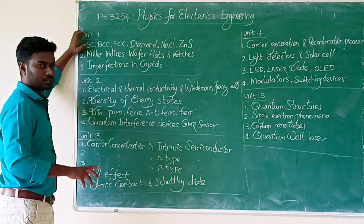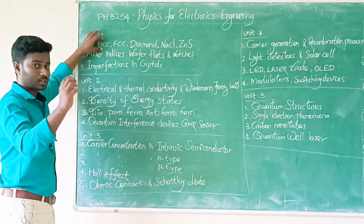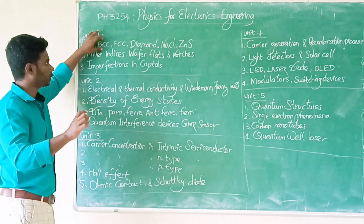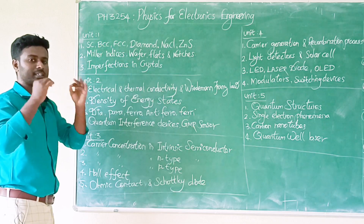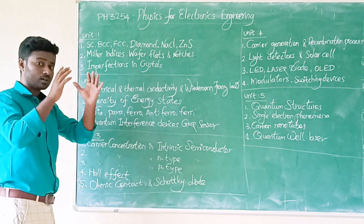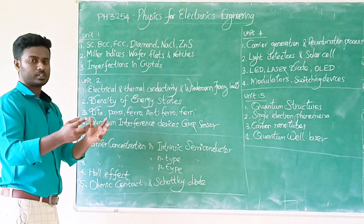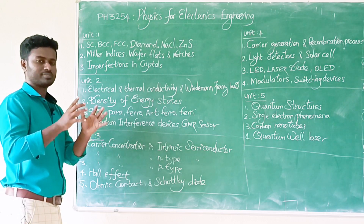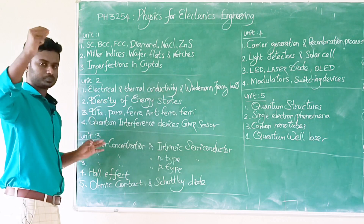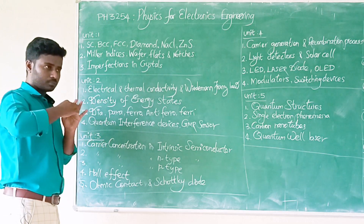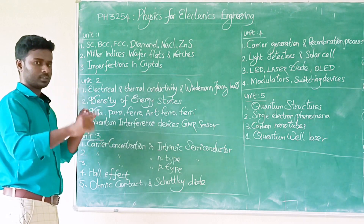Simple Cubic has atoms at the corners only. Face-Centered Cubic has atoms at the corners and on the faces. Diamond structure also has atoms at the corners and on the faces, plus additional atoms inside.